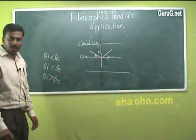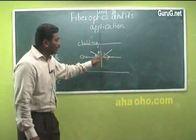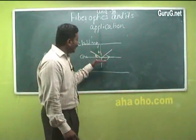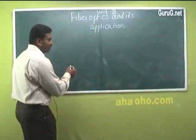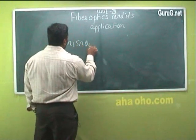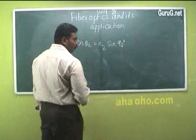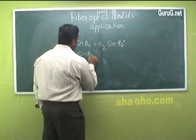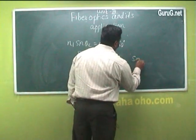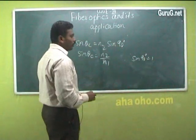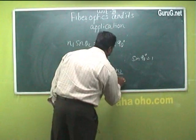Total internal reflection takes place only when the angle of incidence θi is greater than the critical angle, so all the light energy will be totally internally reflected and the light waves can pass through the optical fiber. Applying Snell's law: n1 sin θc = n2 sin 90. We want the critical angle θc, so sin θc = n2/n1, since sin 90 = 1. Therefore, the critical angle θc = sin⁻¹(n2/n1).